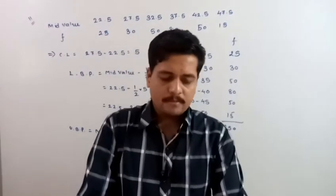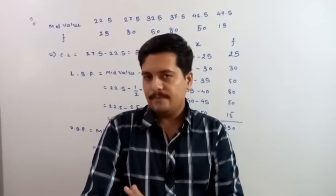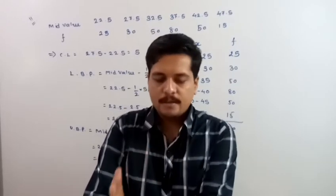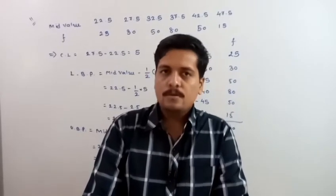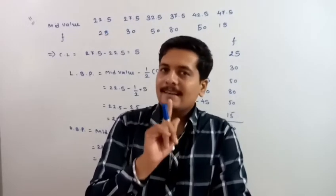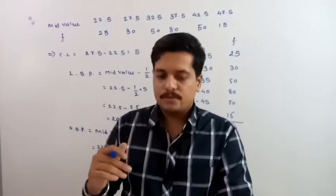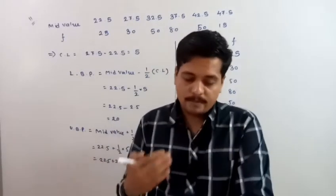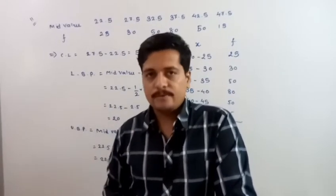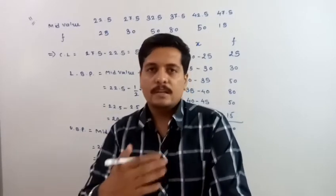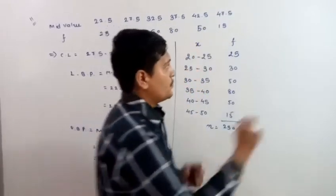After this comes Example number 12, which you have to do on your own — it has the same concept. The mid values given are 0.5, 2.5, 4.5, 6.5, 8.5. The gap between consecutive values is 2, so half of 2 is 1 — class length will be 1. Here the frequency distribution is exclusive and you need to convert it to inclusive form.